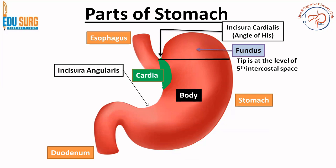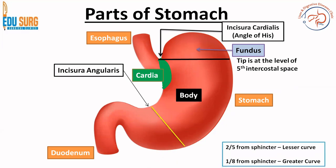The area above the incisura angularis is the body of the stomach. This can be measured as roughly 2/5 from the sphincter on the lesser curve and 1/8 of the sphincter on the greater curve. So the upper part of the body will be 3/5 in the lesser curve. If you divide the lesser curve into 5 parts, the 3 parts are in the body and 2 parts are in the pylorus. From the greater curve, if you divide it into 8 parts, one of those parts is in the pylorus below the incisura angularis.